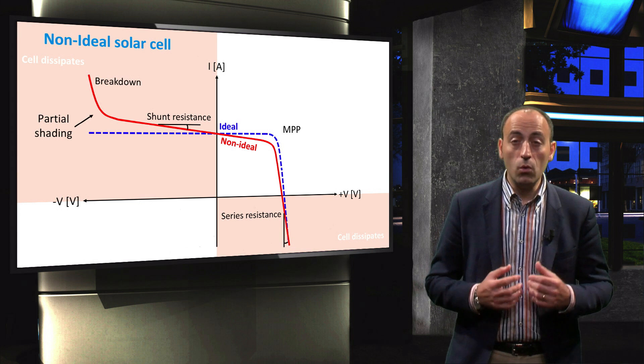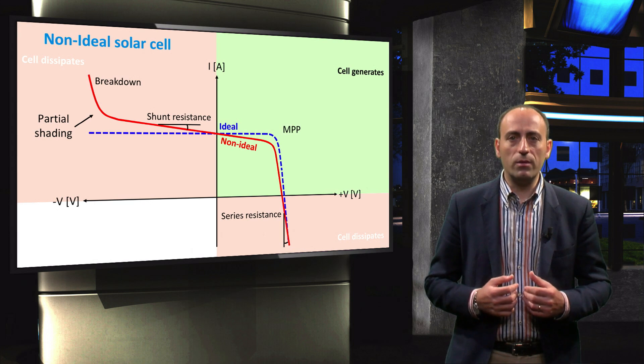Only when both quantities are positive, the module generates power that can be delivered to the load. We have now discussed the IV behavior of a single solar cell, an ideal PV module and a non-ideal PV module. In the next video, we will continue our discussion of the IV curve of interconnected cells.